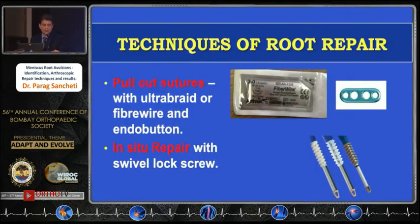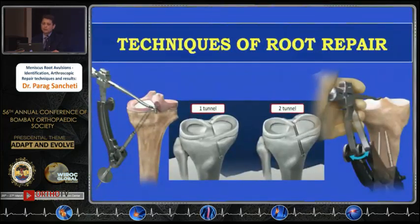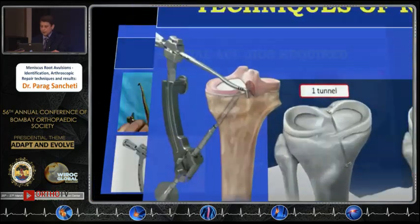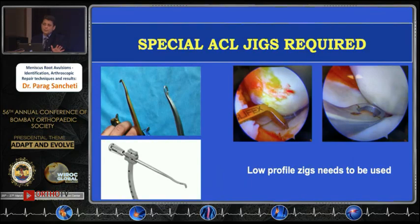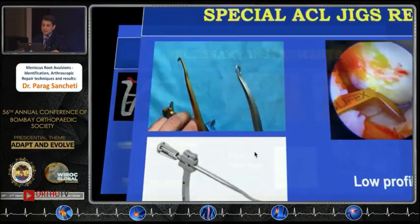Coming to the technique, there are two techniques and the most commonly used — which I do — is the pull-out sutures using a swivel lock, which is technically challenging. In the pull-out sutures we have the one-tunnel and the two-tunnel technique, but it is easier to do the one-tunnel technique. You need special equipment — regular ACL jigs have difficulty because the tip aimer cannot pass in the limited space, so use a low-profile jig where you can go into the posterior space.